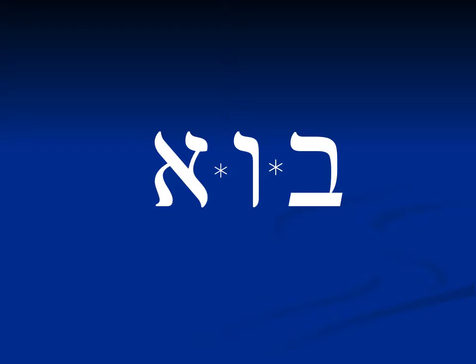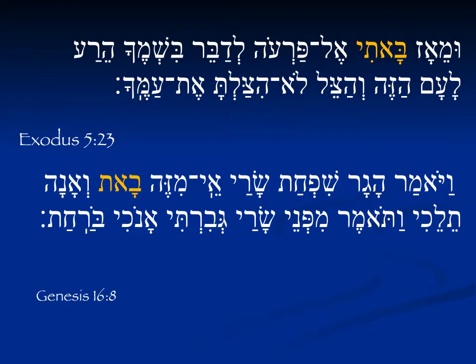Our hollow verb is 'bo,' meaning 'to come' — it has a vav in the middle. As you recall from the present tense, the vav does not appear in the participle tense, and it does not appear in the perfect tense either. We're just going to see these endings. In Exodus 5:23: 'Bati el Paro' — 'From then, I came to Pharaoh.' It looks quite normal and has no vav.